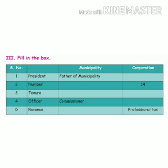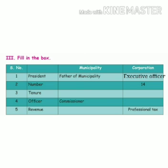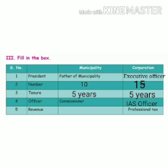Third: filling the box. The particulars are head, number, tenure, officer, and revenue — for both municipality and corporation. Head of municipality: Chairperson. Head of corporation: Mayor. Number of members in municipality: ten. Number of members in corporation: fifteen. Tenure for both: five years. Officer of municipality: Commissioner. Officer of corporation: IAS officer.